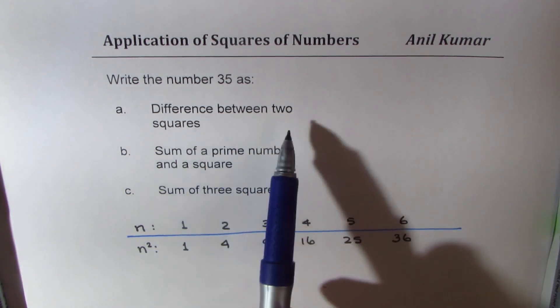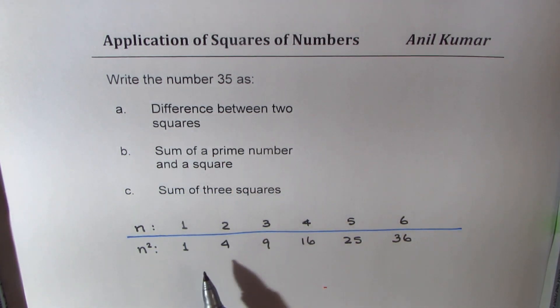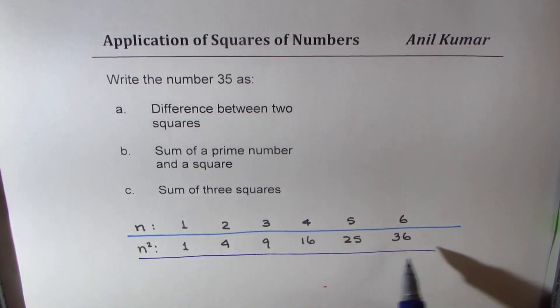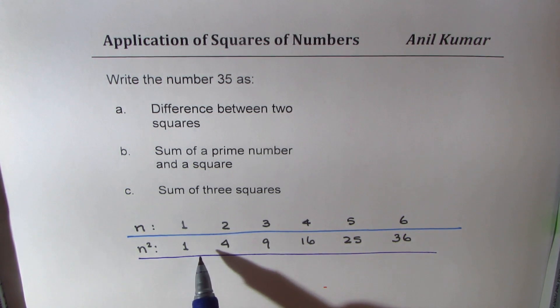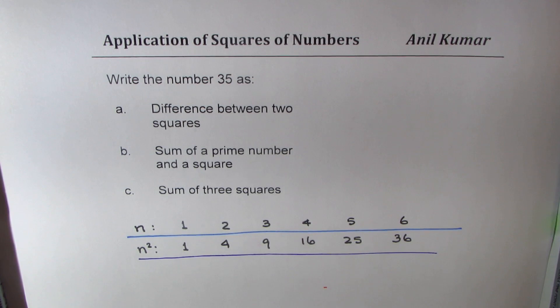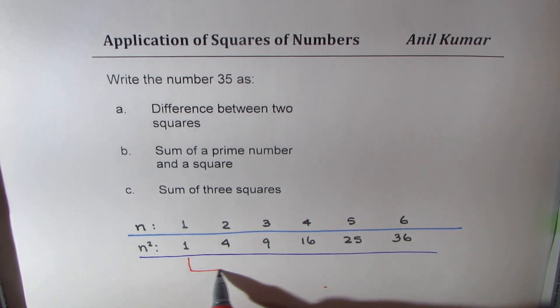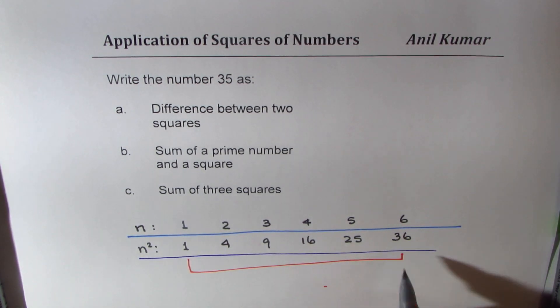Now, we need difference between two squares, that means difference between two of these numbers should give us 35. So, clearly, that could be between 1 and 36, correct?